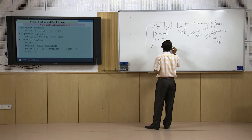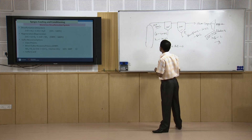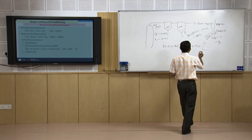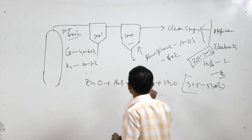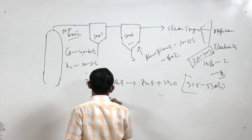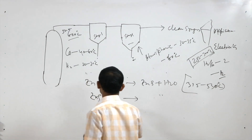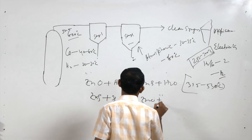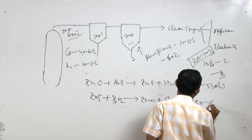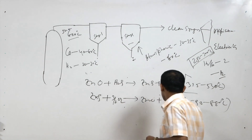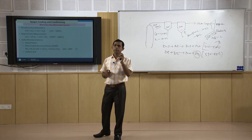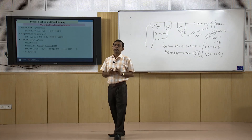For example, ZnO plus H2S gives ZnS plus H2O at around 315 to 530 degrees centigrade. Further, ZnS when heated in the presence of oxygen gives ZnO plus SO2 at 590 to 680 degrees centigrade. Once SO2 is produced from the adsorbed material with high concentration, that SO2 can be used for further applications — such as the production of sulfuric acid, because SO2 is converted to SO3 by vanadium pentoxide (V2O5).